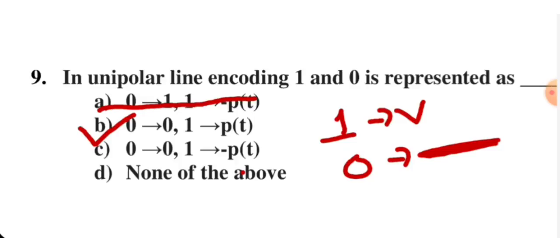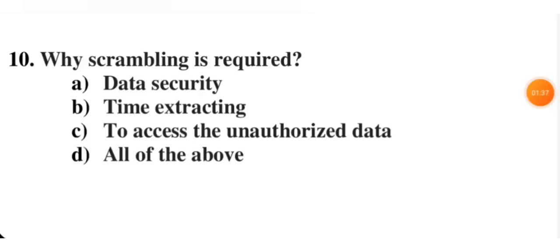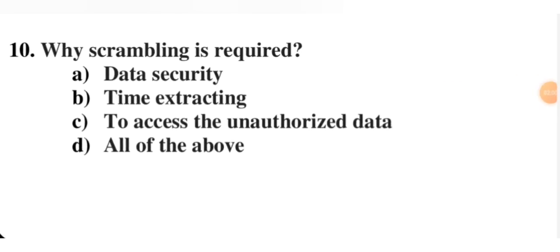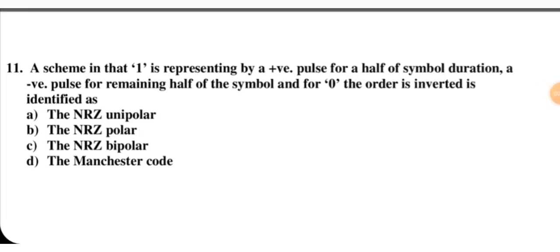Why is scrambling required? Scrambling is required so that our data cannot be stolen — it is for data security. Sometimes the data has long strings of ones and zeros which are hard to identify. That's why scrambling is used — it is for data security.